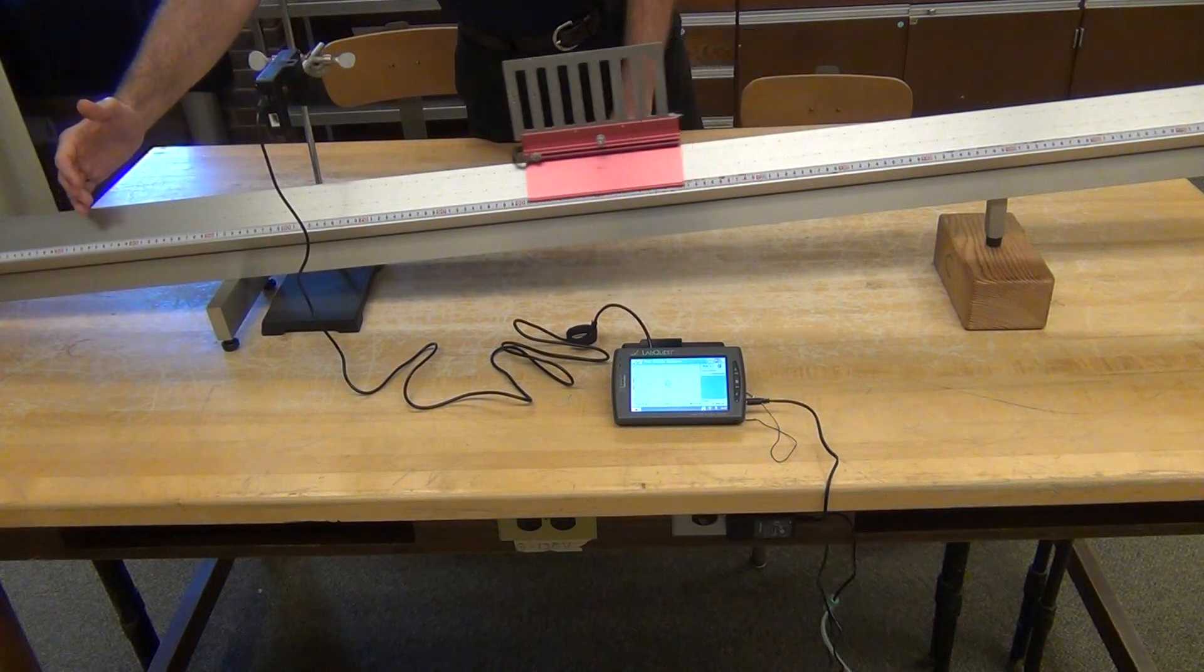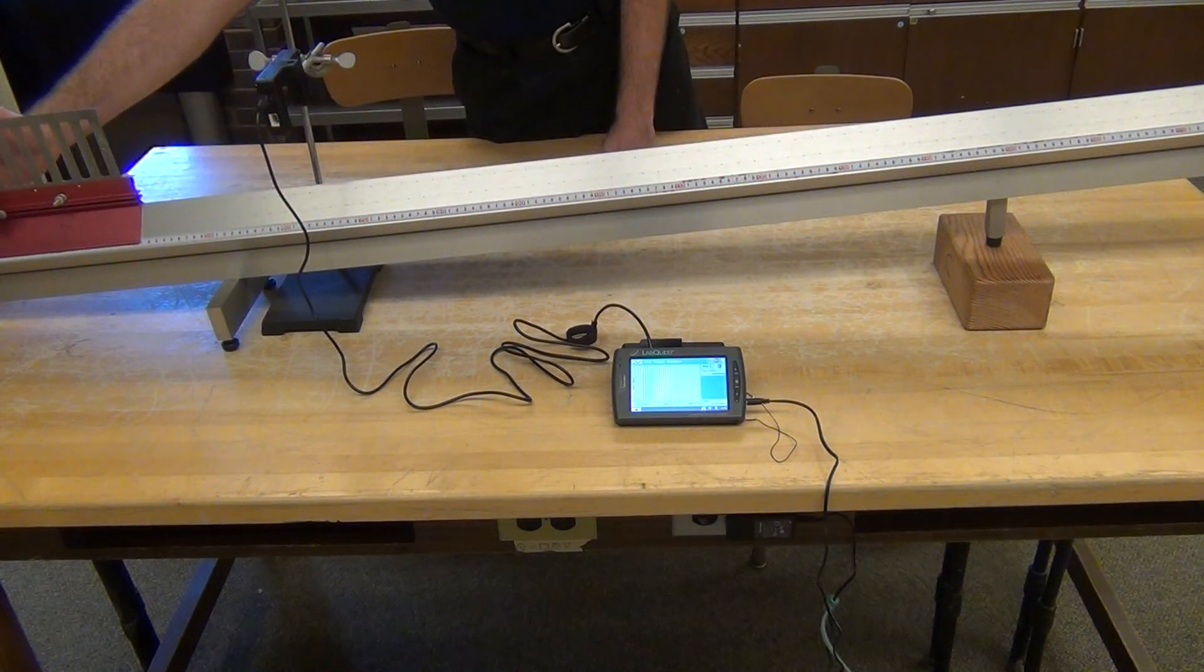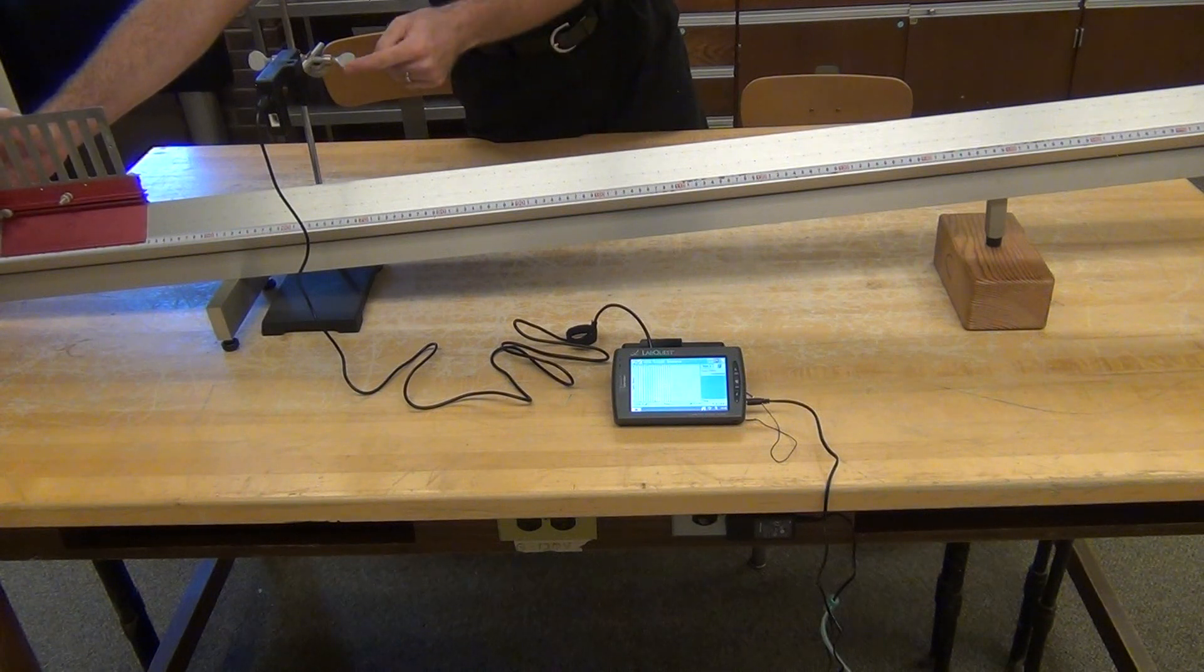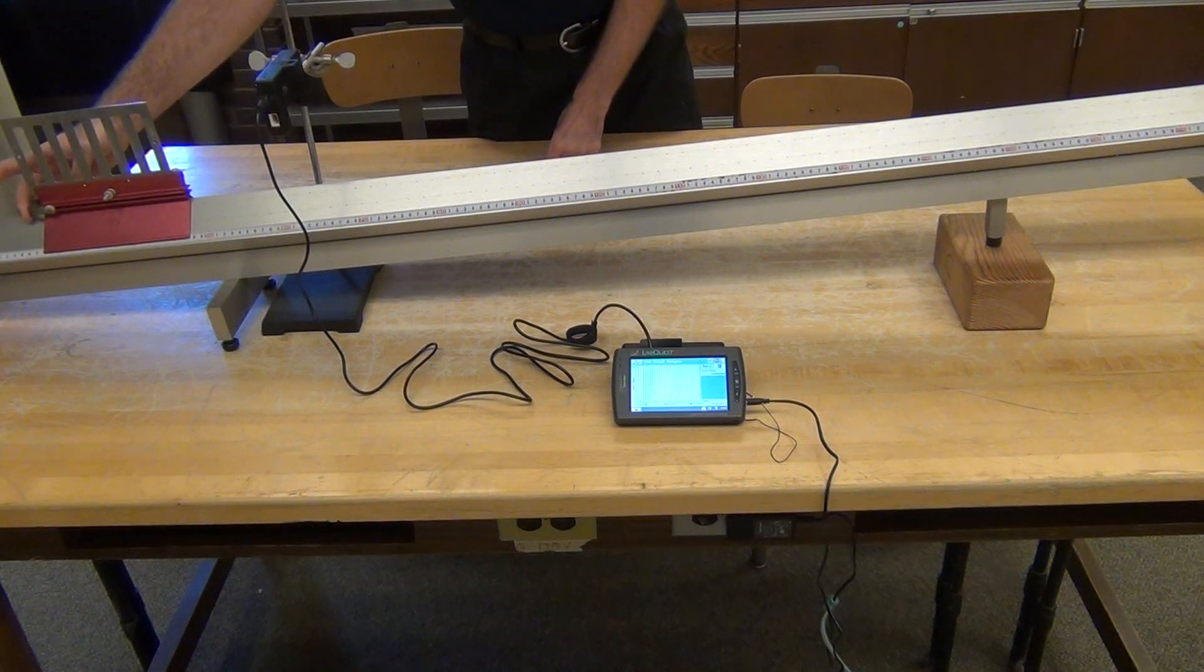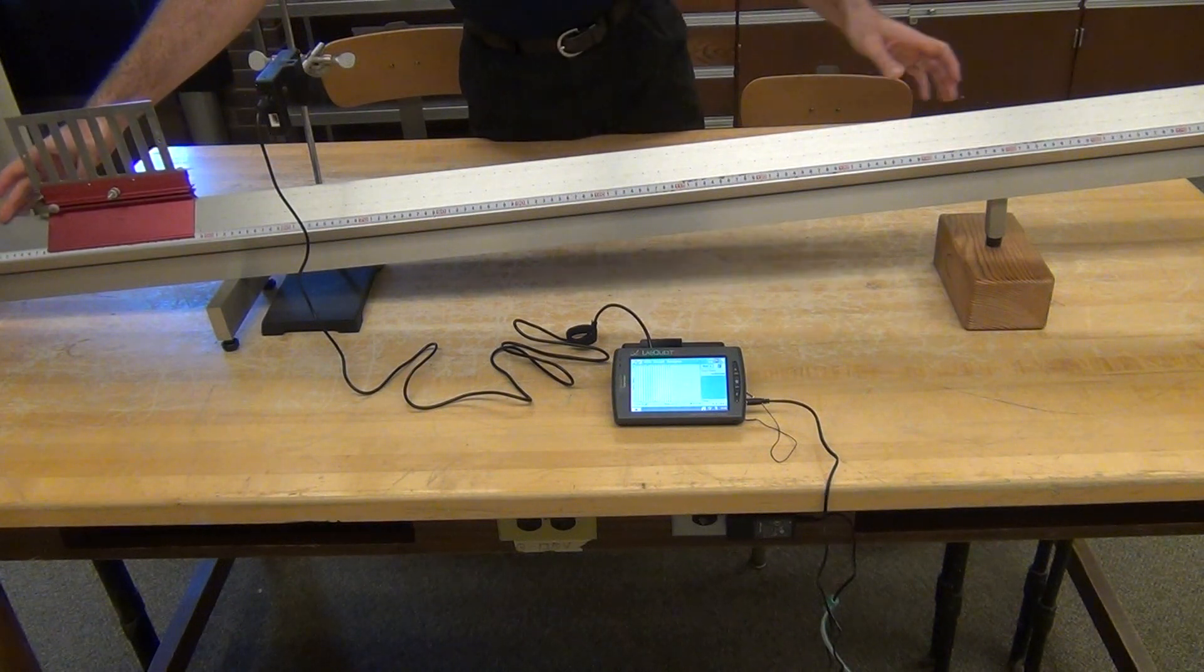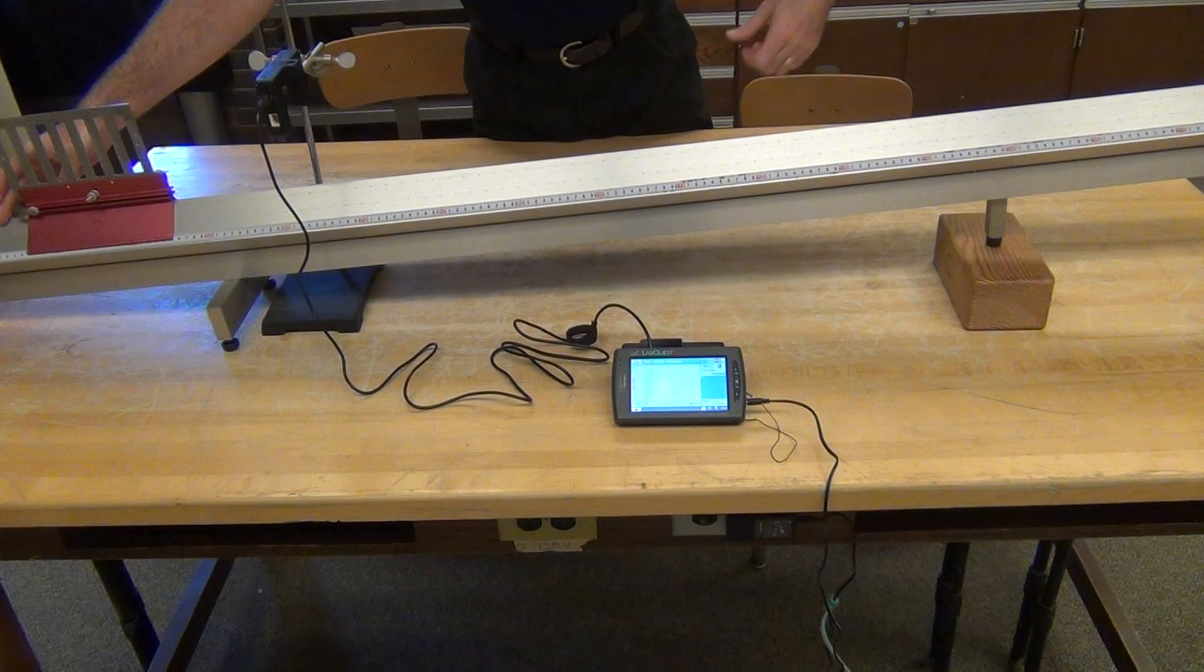I let go, and I or somebody else in my group catches after it's gone completely through the Photogate, but before it runs into the end of my air track and shifts everything in the collision.